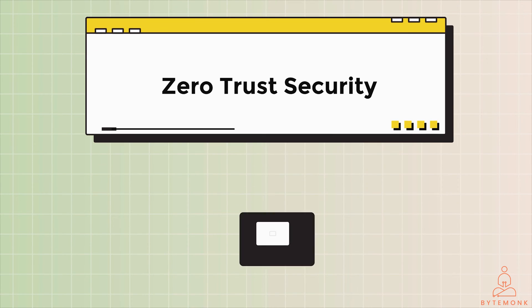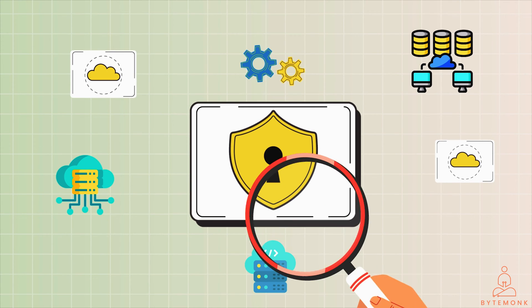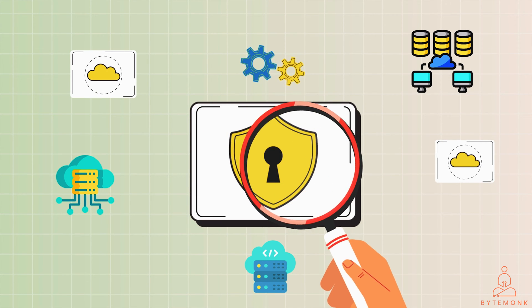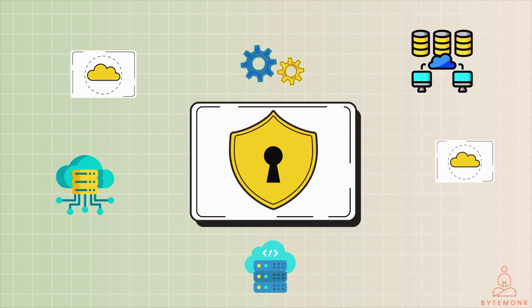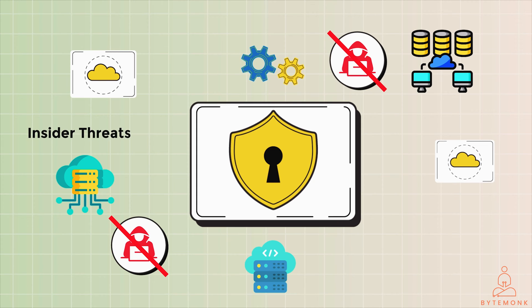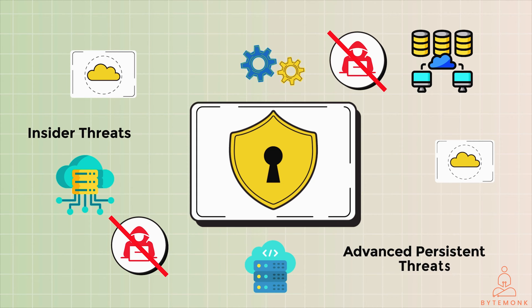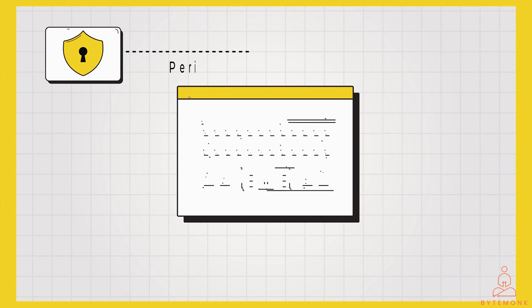Zero trust security, or ZTS, is a cybersecurity approach that assumes that no one or nothing can be trusted by default. Instead, it verifies the identity and authorization of all users and devices before granting access to resources. This helps to protect organizations from a wide range of threats, including insider threats, advanced persistent threats (APTs), and supply chain attacks.